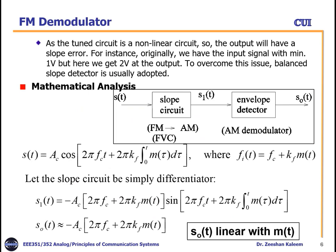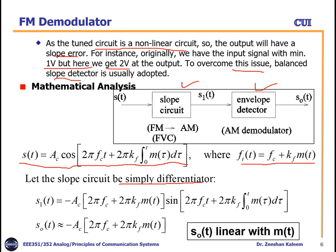Since the tuned circuit is a non-linear circuit, the output will have a slope error. For instance, the input signal had a minimum voltage of 1 volt, but the output gives 2 volts — a mismatch. To overcome this, a balanced slope detector is usually adopted, which differs from the simple slope detector. For mathematical analysis, the slope circuit can be modeled as a differentiator. The input FM signal is: s(t) = Ac·cos(2π·fc·t + 2π·kf·∫m(t)dt), and the instantaneous frequency is fc + kf·m(t).